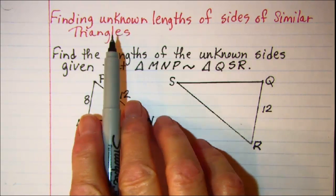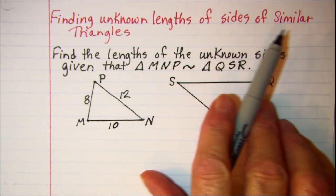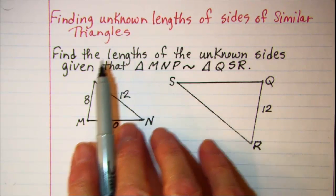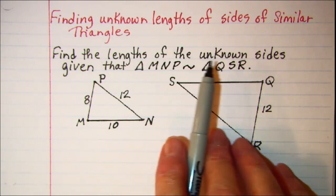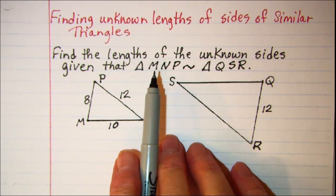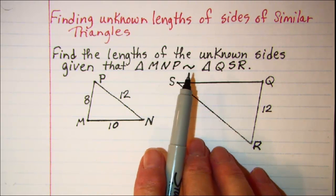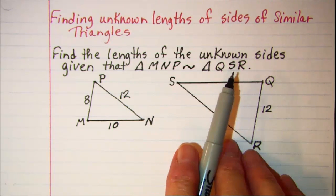In this video we'll be finding unknown lengths of sides of similar triangles. Our problem is to find the lengths of the unknown sides given that triangle MNP is similar to triangle QSR.